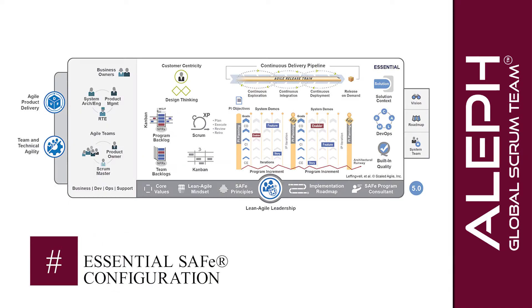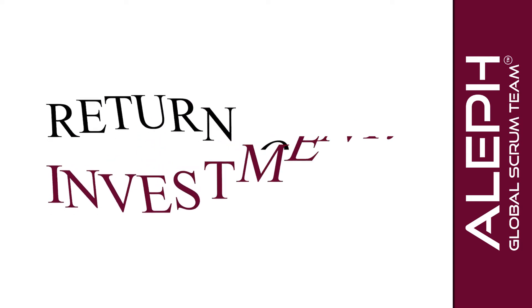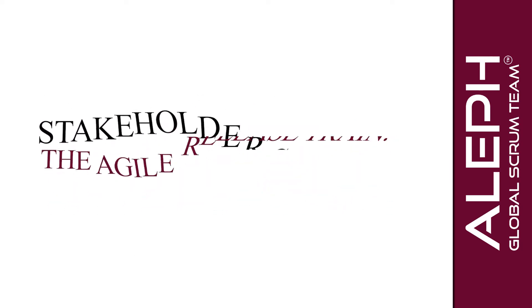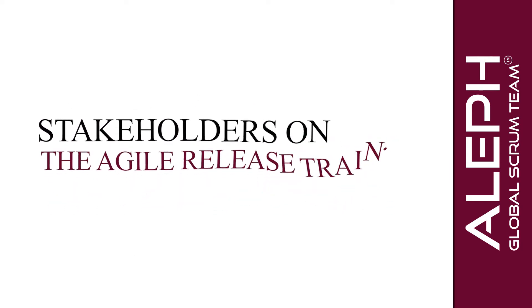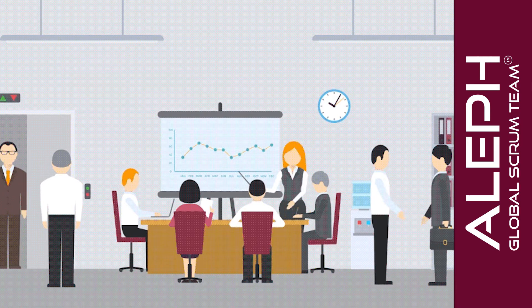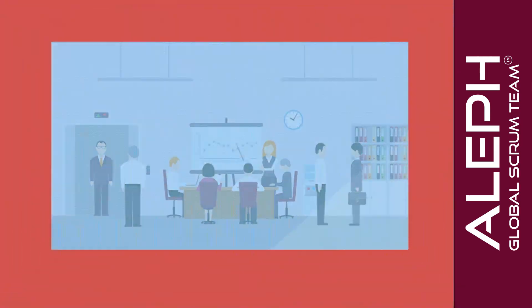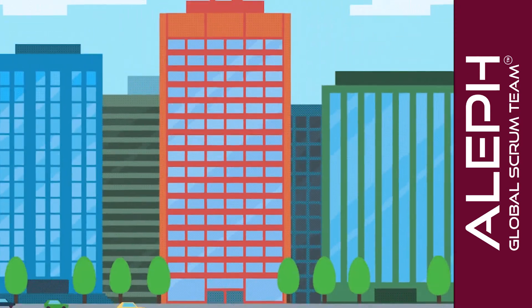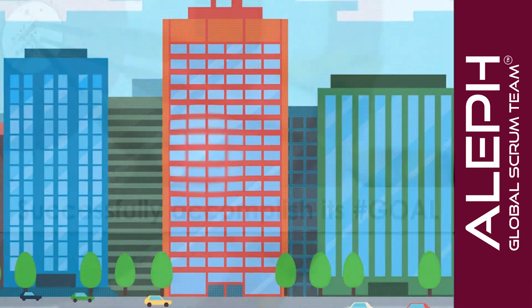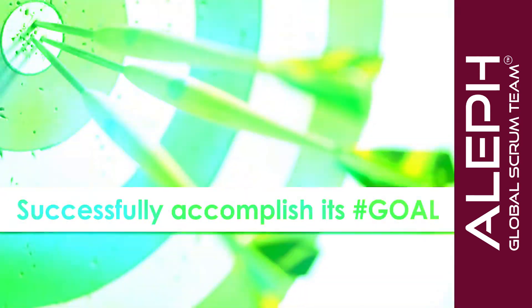Essential SAFe starts with the support of the business owners. These are a small group of stakeholders who have the primary business and technical responsibility for a return on investment. They are key stakeholders on the agile release train who evaluate fitness for use, and they ultimately steer the ART where it needs to be to successfully accomplish its goal.